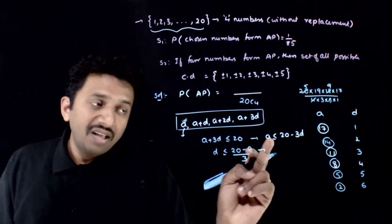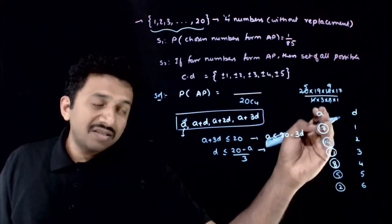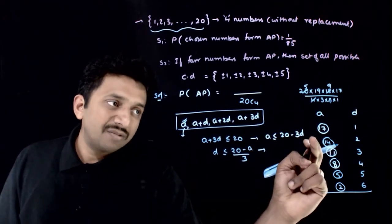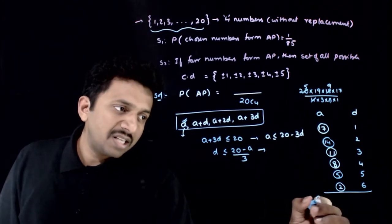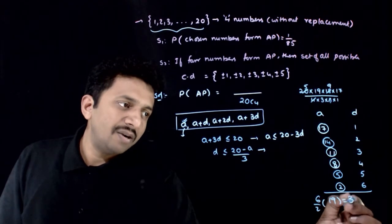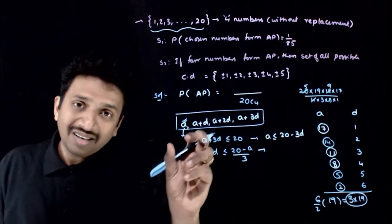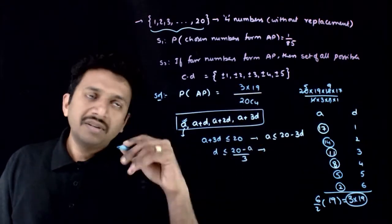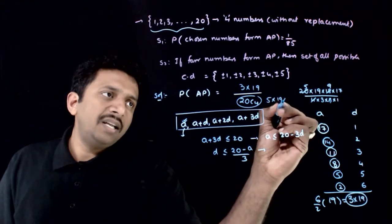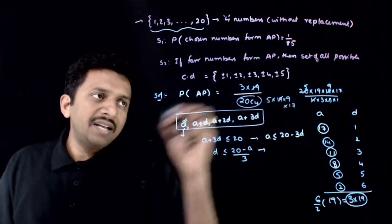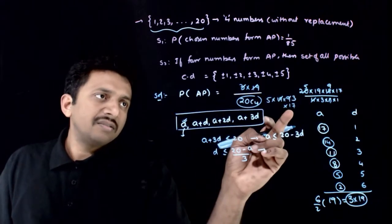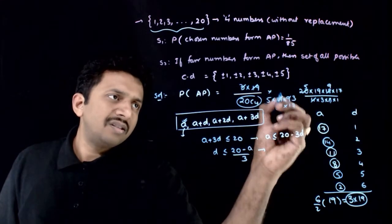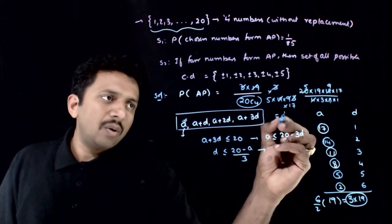If D = 7, A is not possible. So corresponding to these common differences, the total number of options is 17 + 14 + 11 + 8 + 5 + 2. These 6 terms are themselves in AP, so the sum is (6/2) × (17 + 2) = 3 × 19 = 57. So the numerator is 3 × 19 = 57. The denominator 20C4 = 5 × 19 × 9 × 17. The 19s cancel, giving 57 / (5 × 9 × 17) = 3 / (5 × 3 × 17) = 1 / 85.